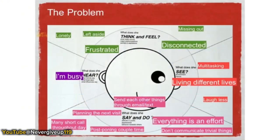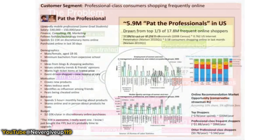Another example was someone trying to understand the customer problem of couples who happen to be on separate coasts or long distance from each other. They were trying to understand what the problems were, and they were able to articulate all the key pieces and rank them by priority — a great way to diagram the problem.